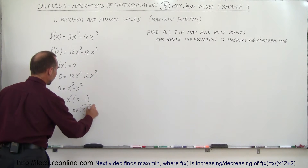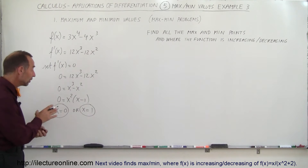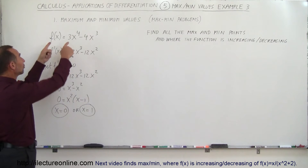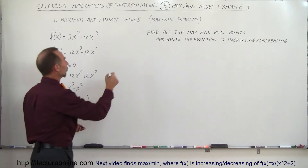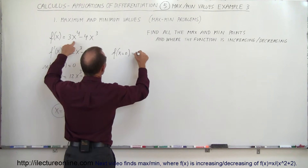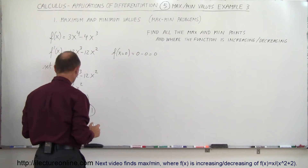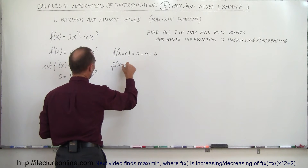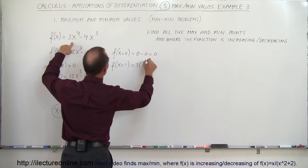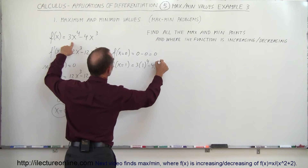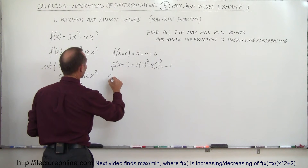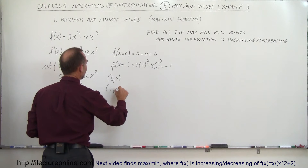For those two values of x we have a critical point — we know the slope will be equal to zero there. To find where those two points are on the graph, we plug them back into the original function to find the corresponding y-values. When x equals zero, f(0) = 0 minus 0 = 0, so our first point is (0, 0). For f(1): 3 times 1 to the fourth minus 4 times 1 cubed equals 3 minus 4, which is negative one. So the two critical points are (0, 0) and (1, -1).